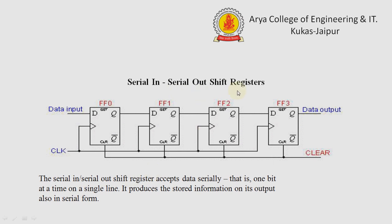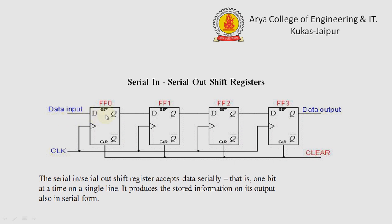The first type is the serial input serial output shift register. In serial input serial output shift registers, it accepts input data in serial form and also gives output data in serial form, meaning it produces the stored information on its output in serial form.